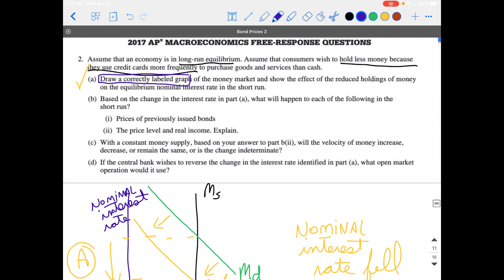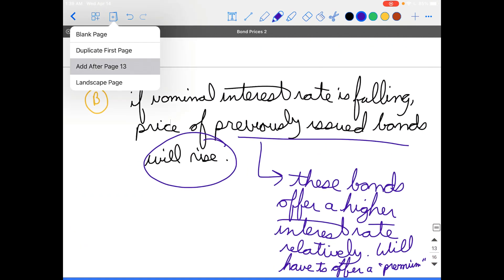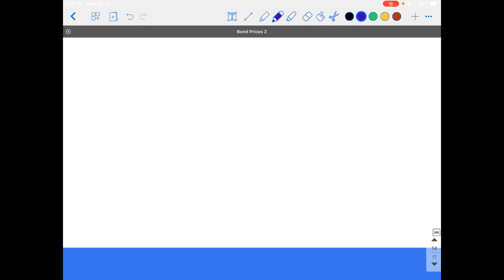Now we need to know what's going to happen to the price level and the real income. If nominal interest rates are falling, to answer this, we're going to need to think about the economy in terms of the aggregate demand curve. So let's draw out what that. Now you're not asked to draw this out, but it's helpful to draw it out because it will help organize your thoughts about what your answer would be in words.